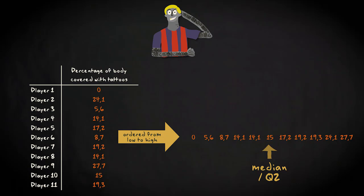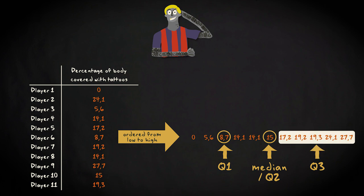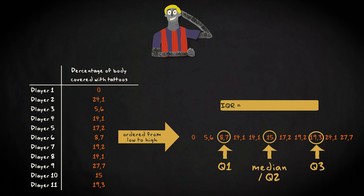You find Q1 by looking for the middle value of the values on the left side of the median. That's here, 8.7. You find Q3 by following the same strategy on the right side of the median. That's 19.3. Now, the interquartile range is Q3 minus Q1 equals 19.3 minus 8.7 equals 10.6.